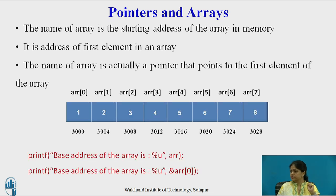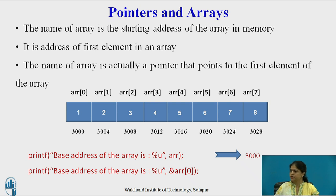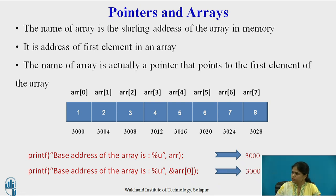For this array, if we print the base address using the format 'base address of array is %u ARR' — meaning we use the name of the array — it is going to print the base address, which is 3000. Similarly, another printf statement using ampersand ARR[0], the address of the 0th element, will also give you 3000. So these are the two ways to print the base address of an array.